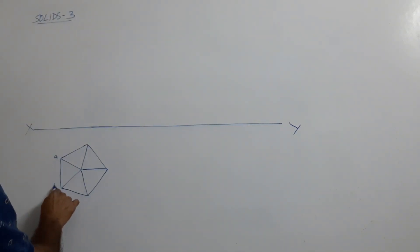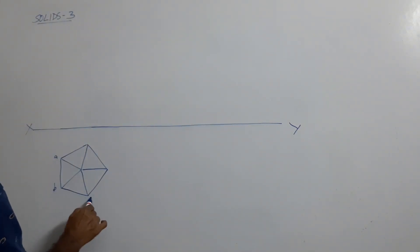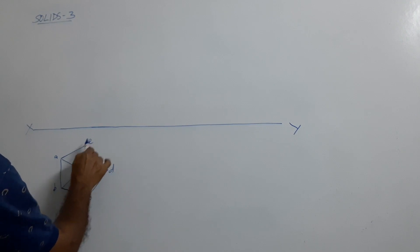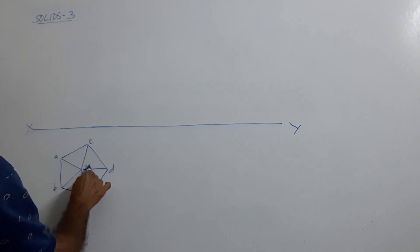Label the points of the pentagonal pyramid: A, B, C, D, E for the base corners, O for the center of the base, and P for the apex.